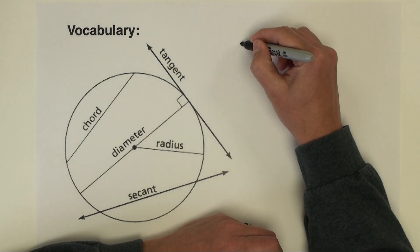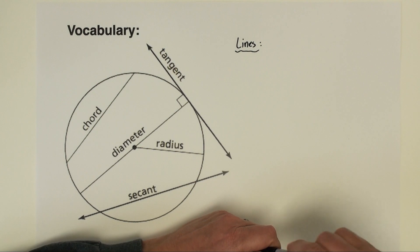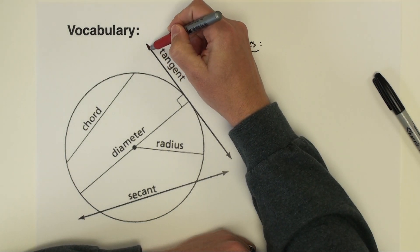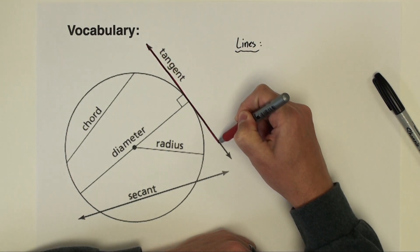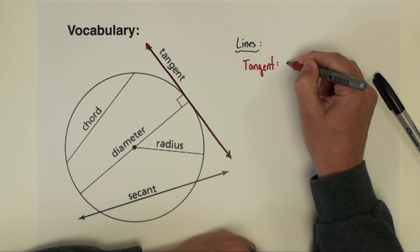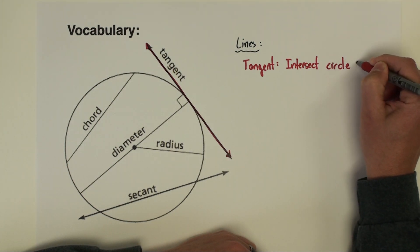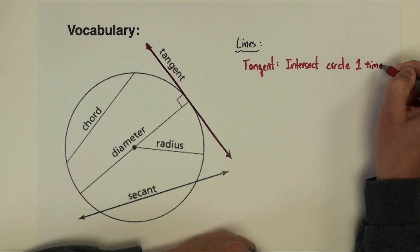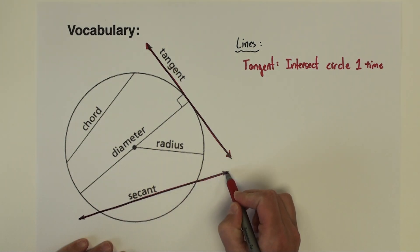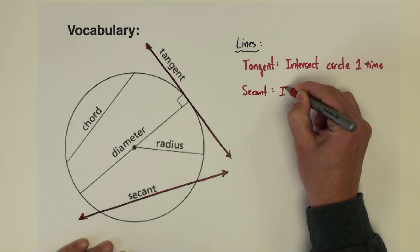First there are two lines we want to talk about. The lines are on the diagram — let's highlight them now. The first one, and probably the most important where we'll spend most of our time, is called a tangent line. A tangent line will intersect the circle one time. Whereas our other line, the secant line, which you can see here, is going to intersect the circle twice.